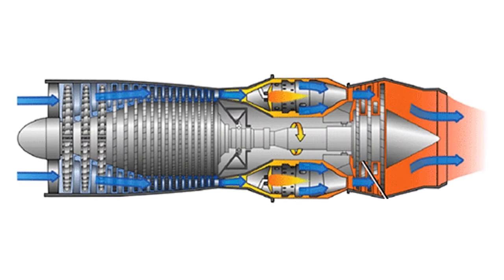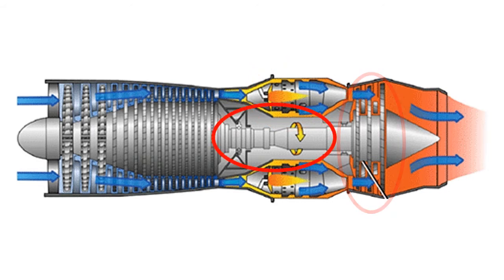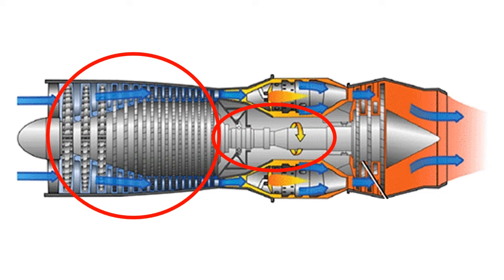In another video, we described the basics of how a jet engine worked. We won't go into too much detail again here, but it is worth reminding you of some of the aspects, as it will be relevant later in this video. The essence of all designs is that hot air from the combustion chamber will flow over the turbines and cause them to rotate. As the turbines are connected to the driveshaft, this causes the driveshaft to rotate. The driveshaft not only turns the compressors, but will also power other aspects of the engine, which we will discuss later.